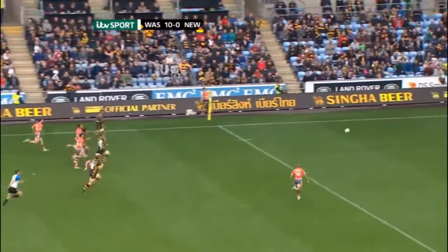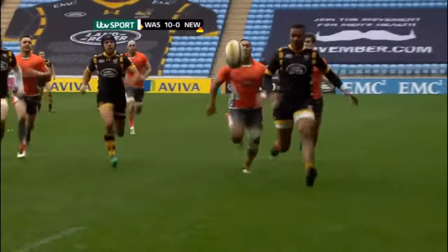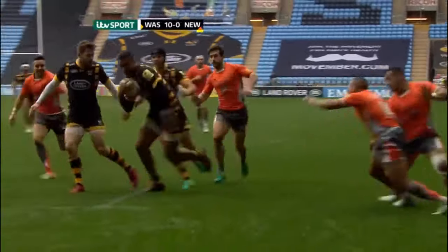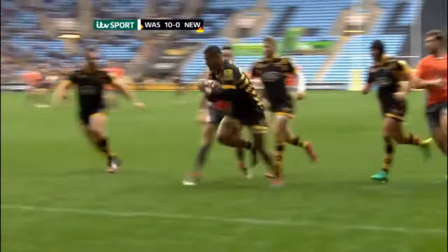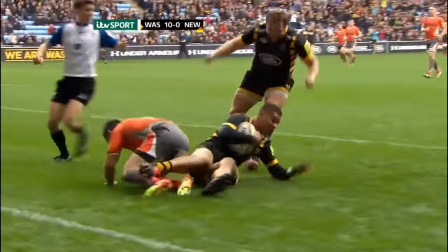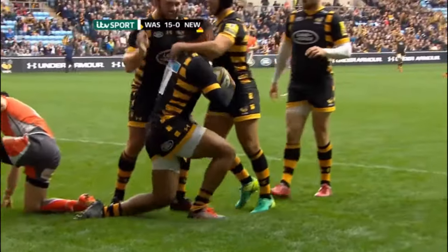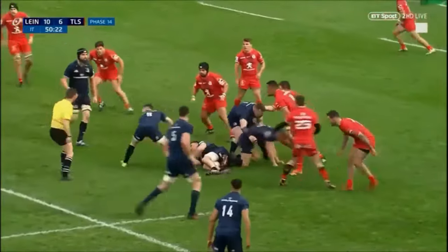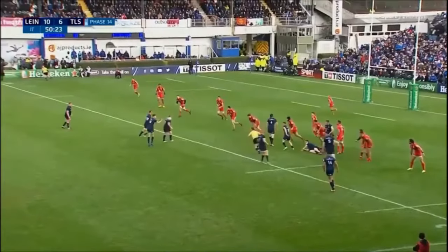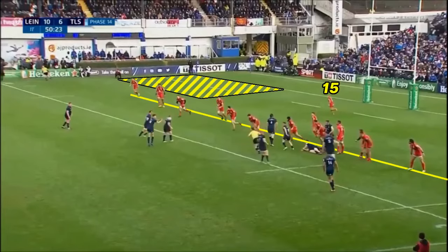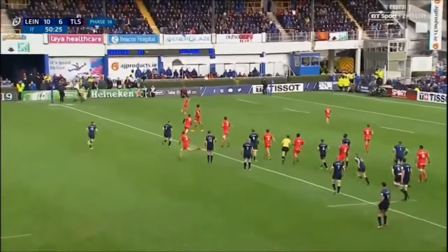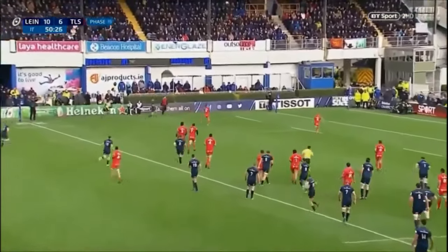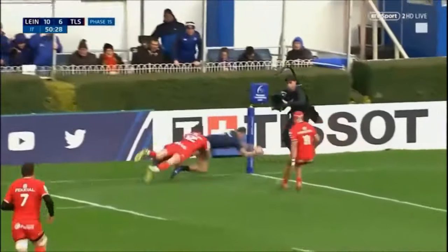Covering behind the ball doesn't only protect from kicks; it also adds another line of defence against any line breaks. That explains why the 15 should be behind the line, covering the space and ready to stop any line breaks. In this example, the defence have set up a good line with the full back behind them with good positioning. However, the wingers are up in the line, leaving space behind them. The 10 hits a great cross-field kick into this space, and the winger does well to recover the ball and score the try.